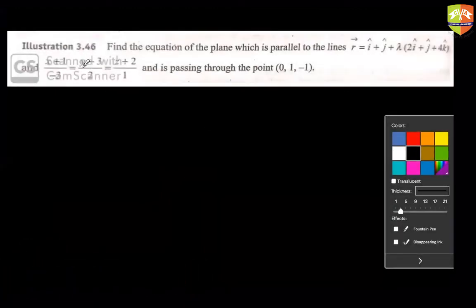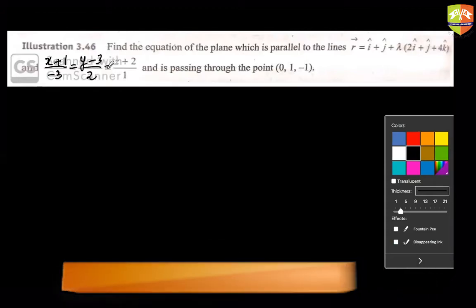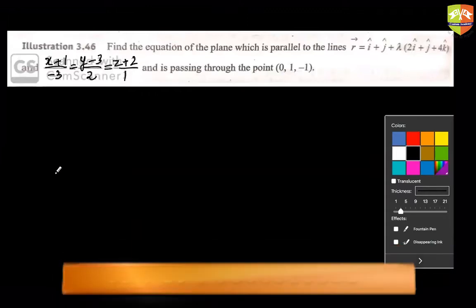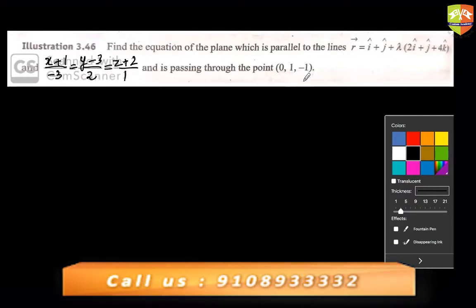There's a question. So let me take another one. By the way, this writing is not that clear. So it's (x+1)/(-3) = (y-3)/2 = (z+2)/1. Find the equation of the plane which is parallel to the lines, this and this, and passing through (0, 1, -1).